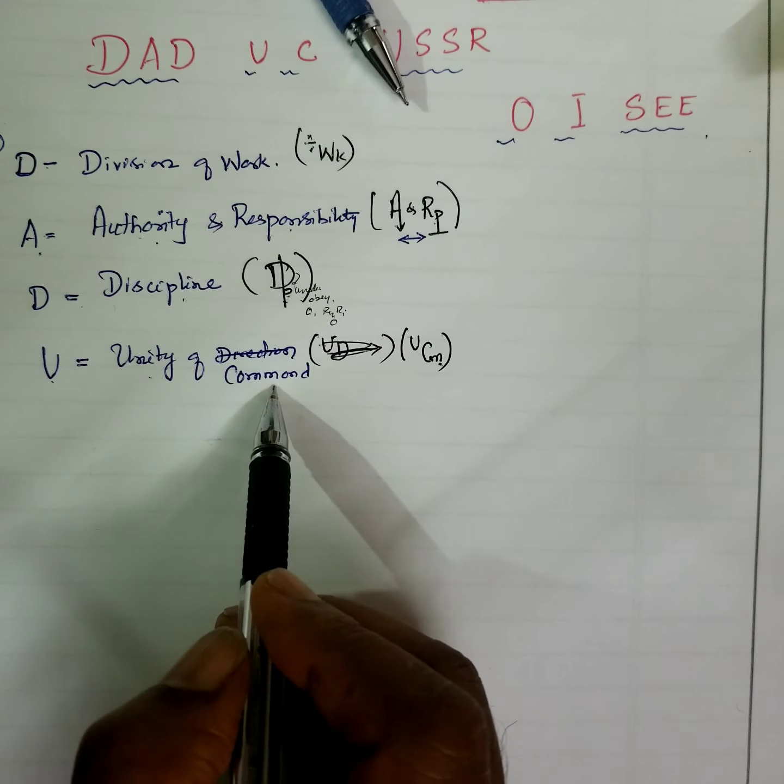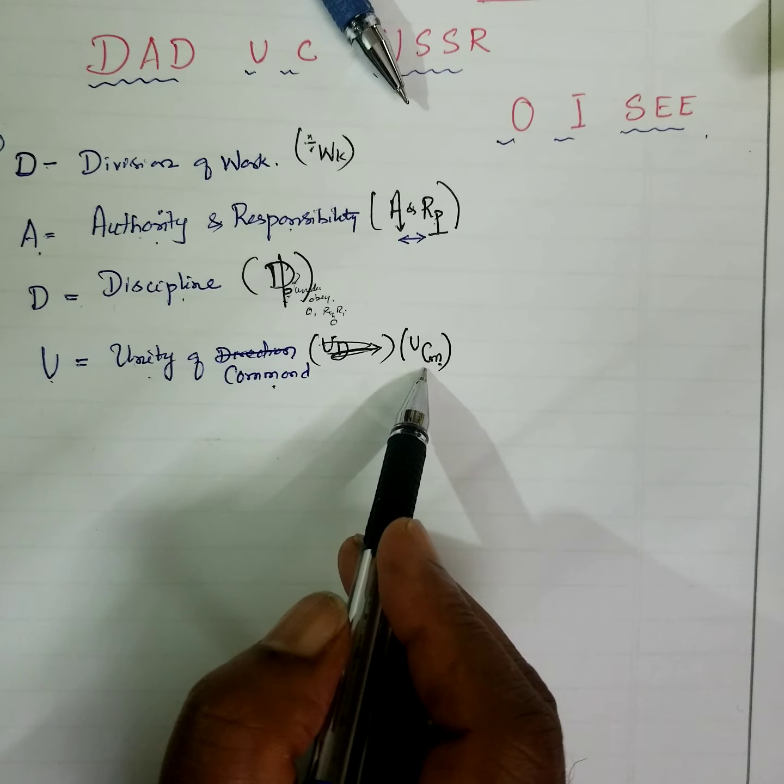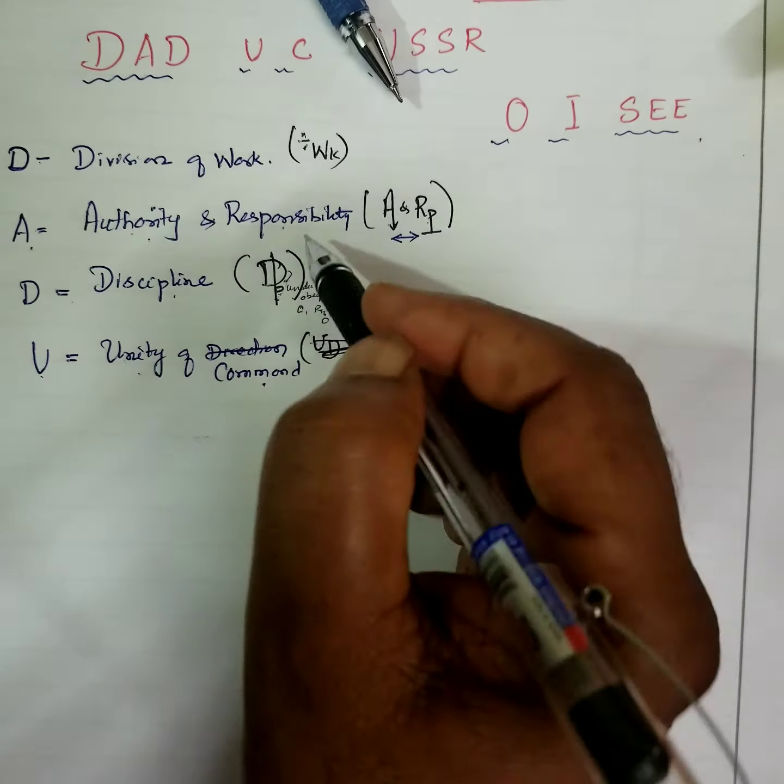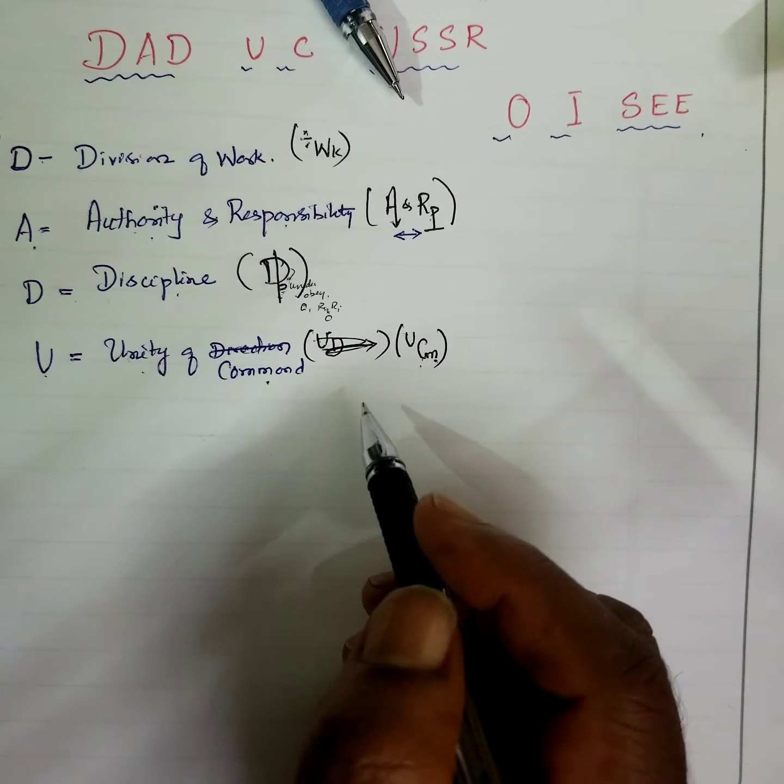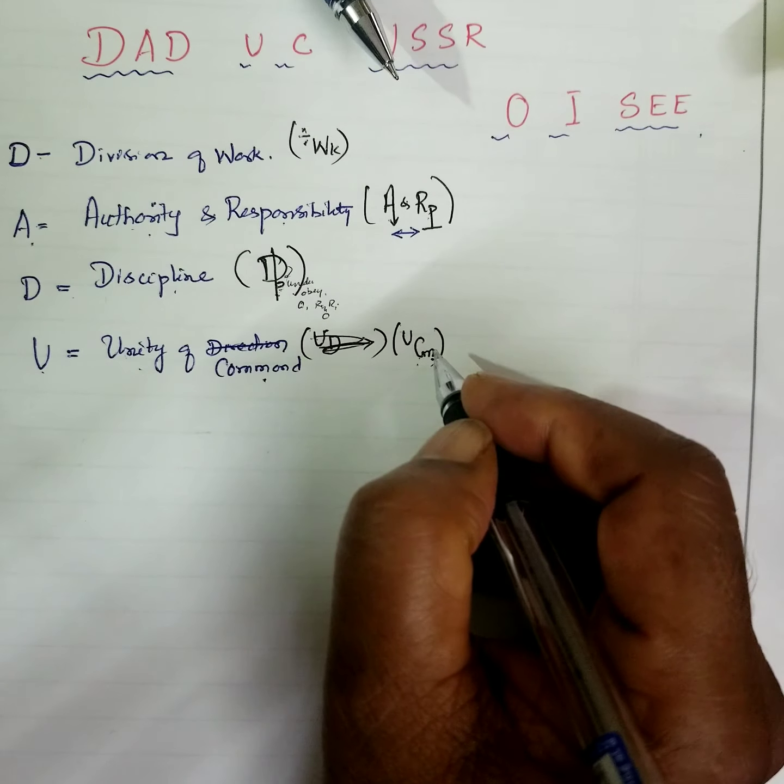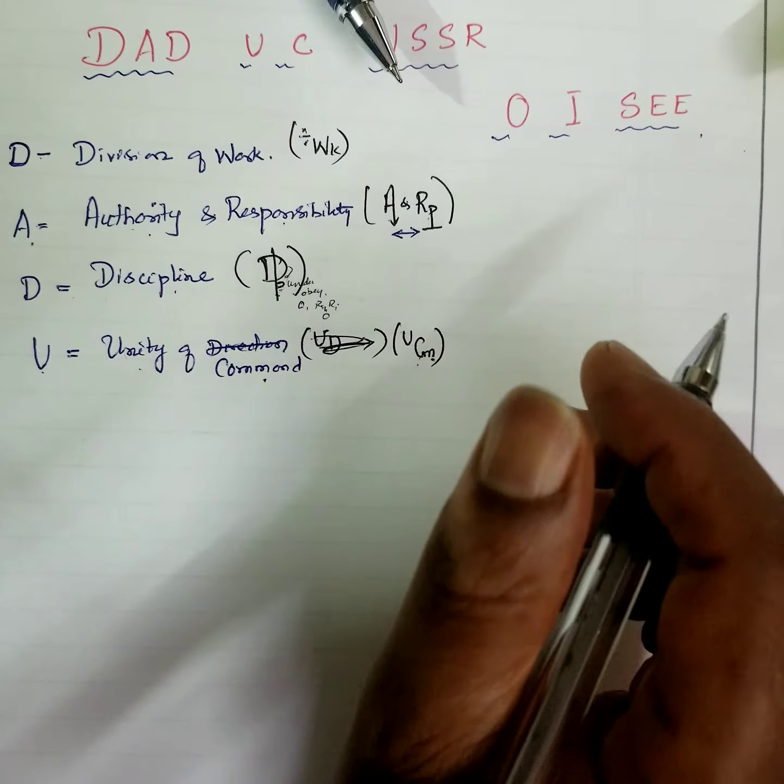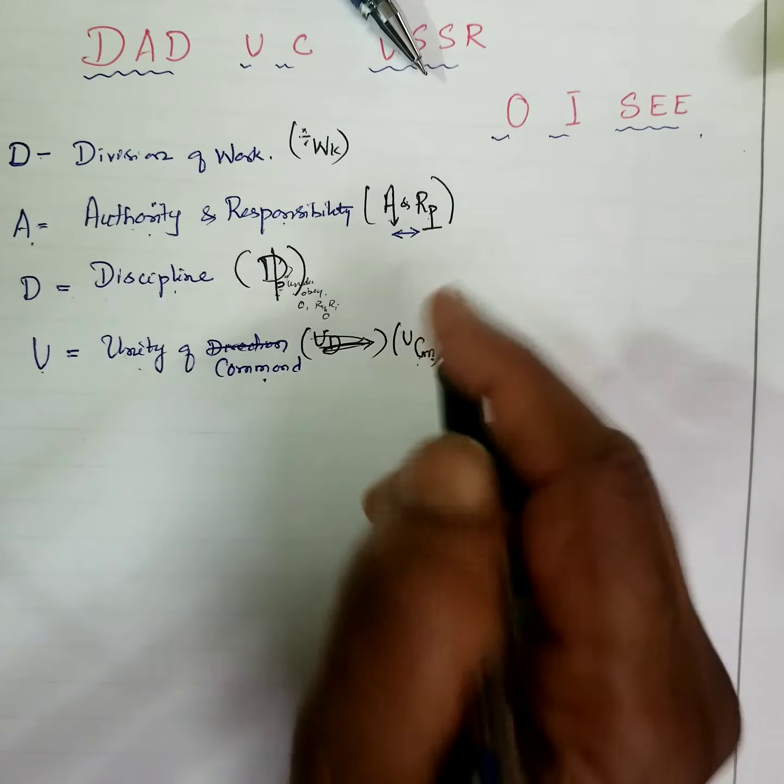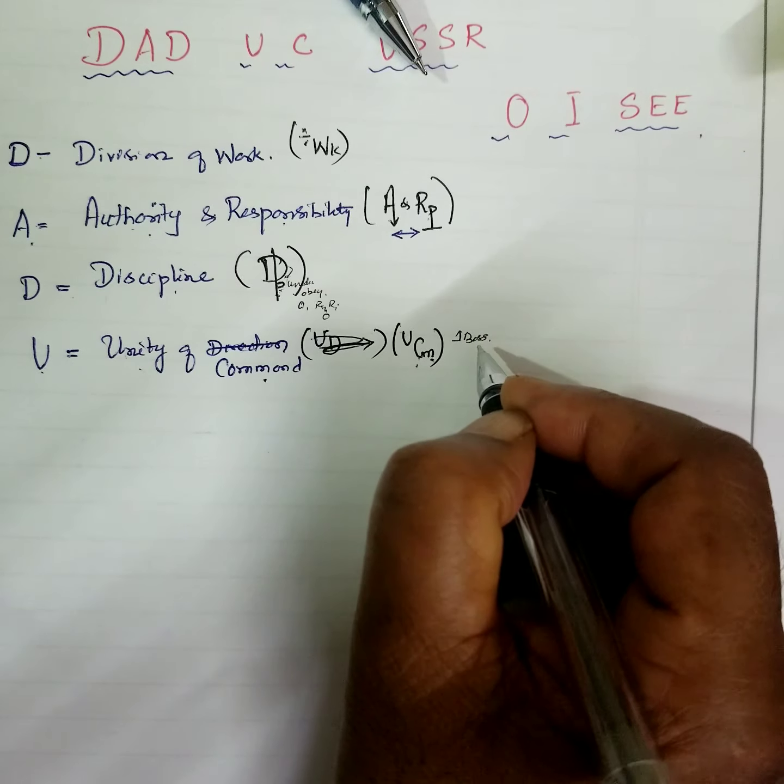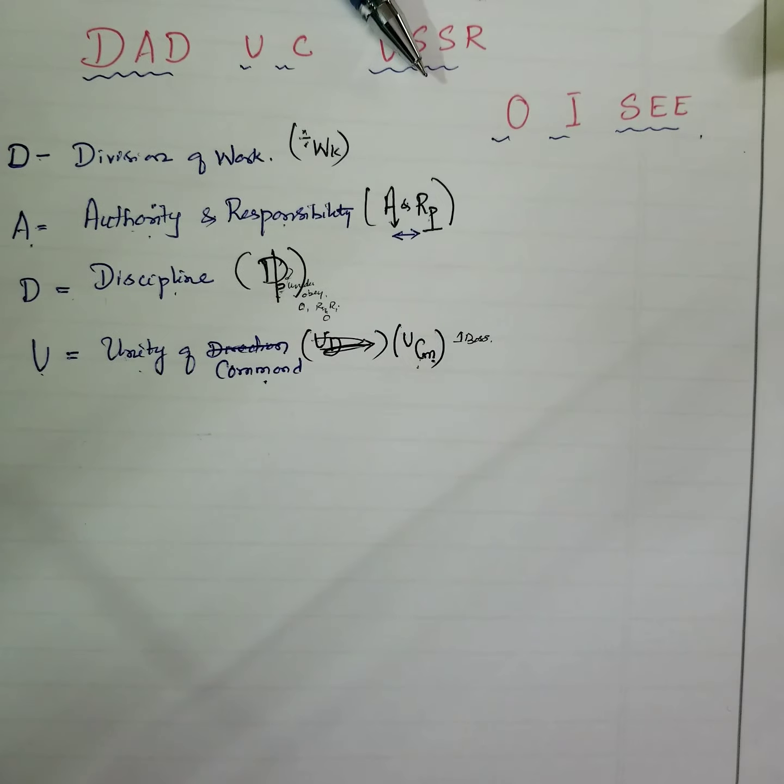U stands for unity of command. Unity of direction also is there, but why I write command first? After taking command only you go in one particular direction. Therefore, I am writing in sequence order. There should be one boss. Only one boss will be for every individual employee to avoid dual subordination and confusion.